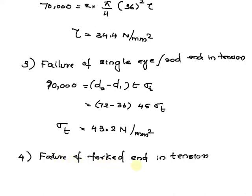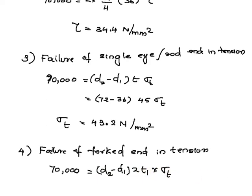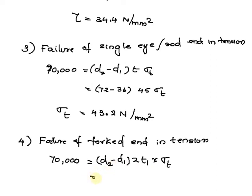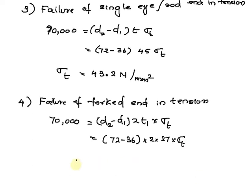Now we will see the failure of forked end in tension. The load is equal to (d2 minus d1) into 2 times t1 into sigma T, which is (72 minus 36) into 2 into 27 into sigma T. From here we get sigma T is equal to 36 Newton per millimeter square.